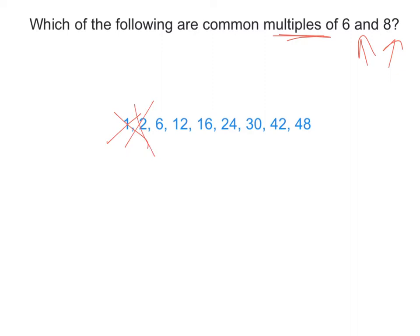Likewise with 6 — 6 is equivalent to 6 but it's less than 8, so I don't have to check that. Now here's where I start getting to numbers that are bigger. I know that 6 can go into 12, so far so good. But can 8 go into 12? Unfortunately it cannot, so that's not correct. Can 6 go into 16? It cannot. Now can 6 go into 24? It can — it goes in 4 times. Can 8 go into 24? It can go in 3 times. So 24 is a correct answer, but I still need to keep checking.